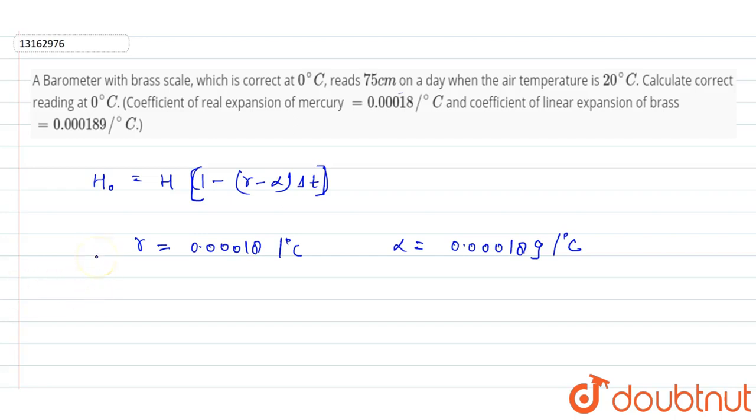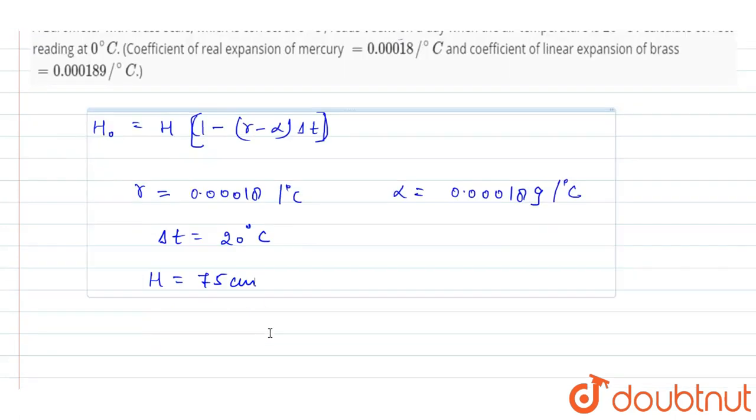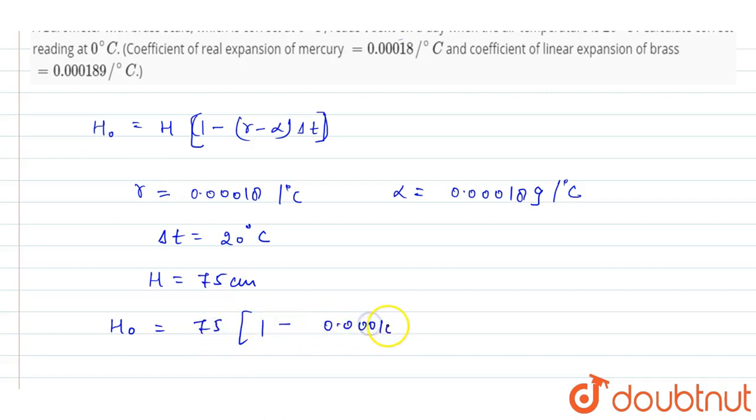Change in temperature delta T equals 20 degree Celsius, and H equals 75 cm. So, putting these in the above equation, we can find out that H₀ equals 75 times [1 minus (0.00018 minus 0.00018) times 20].